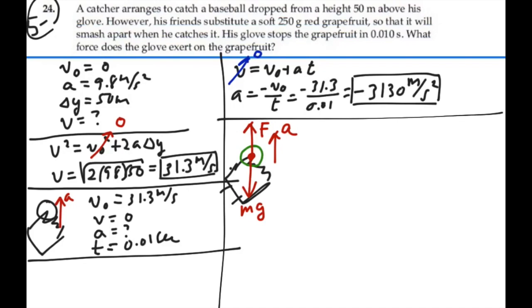So we'll choose, it was a negative if we were assuming down was positive, but now we're going to assume up as our positive direction.